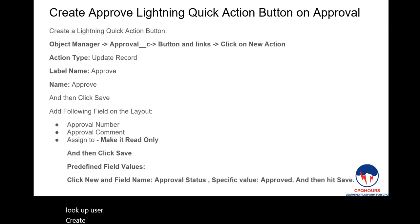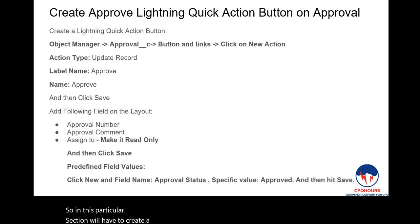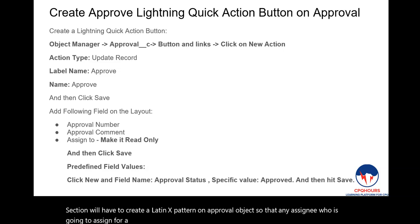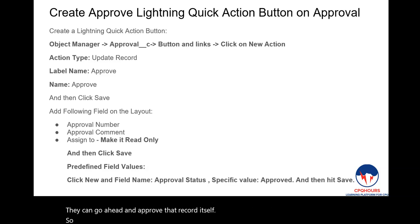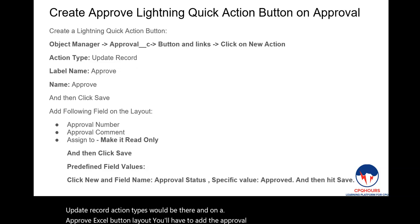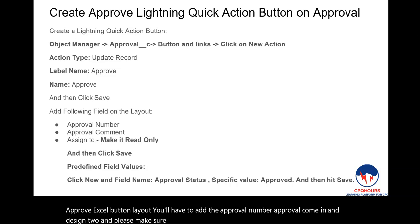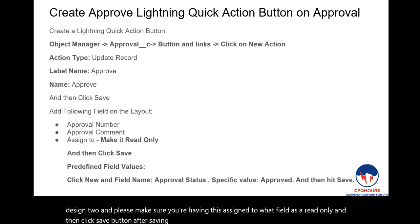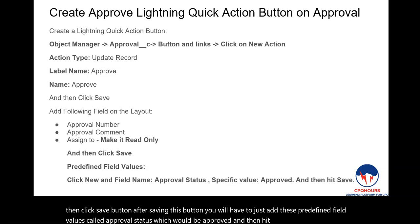Next, create a Lightning Quick Action button on the Approval object. In this section, create a Lightning action button so that any assignee can approve an expense record directly. For the Approve button, the action type should be Update Record. On the Approve action button layout, add Approval Number, Approval Comment, and Assign To — making sure Assign To is read-only. Then click Save and add a predefined field value: Approval Status set to 'Approved.'